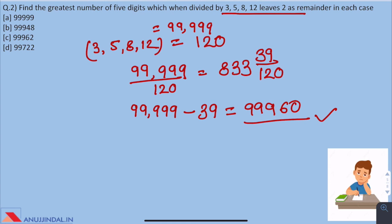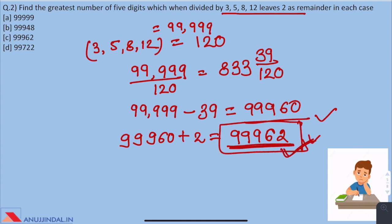As per the question, we have to find a number which leaves a remainder of 2 when it's divided by 3, 5, 8, 12. We will add 2 to the number which we have found out to be divisible by 120 and this is the number which leaves remainder 2 when divided by all of them.